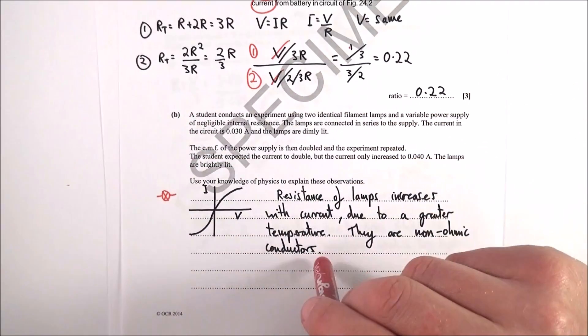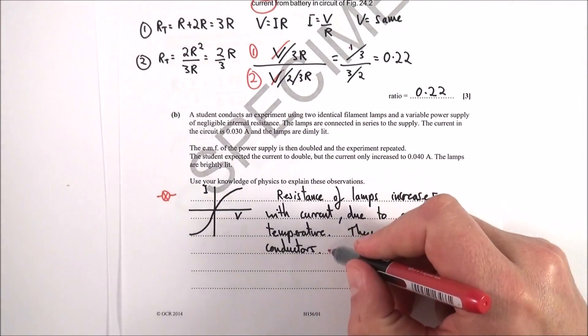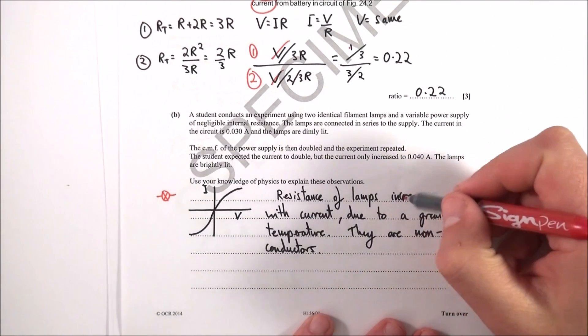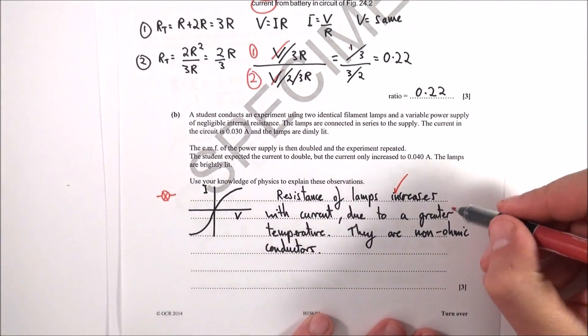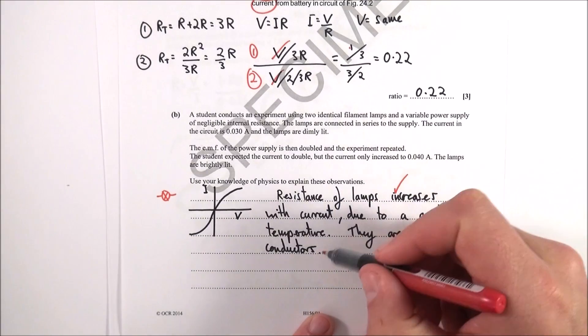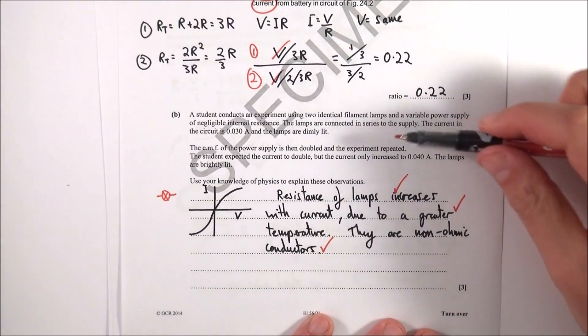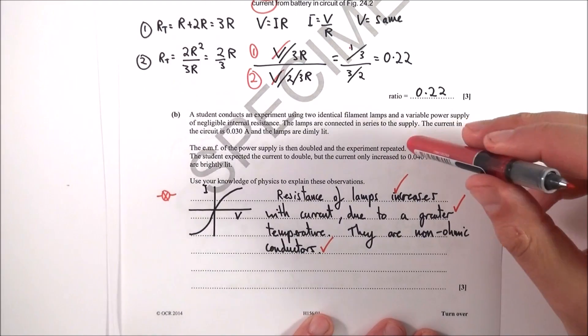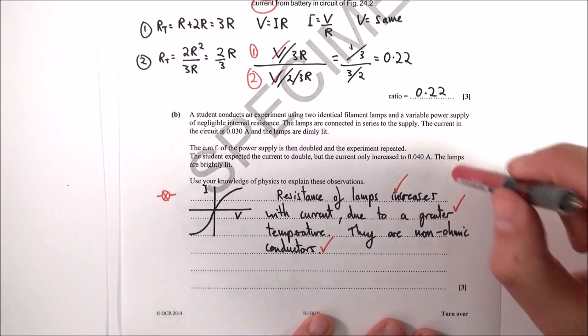Therefore they are non-ohmic conductors. So within my answer here, about the resistance of the lamp increases, we're mentioning this is due to the greater temperature and therefore they're non-ohmic conductors, which is why if you double the EMF you don't necessarily double the current.